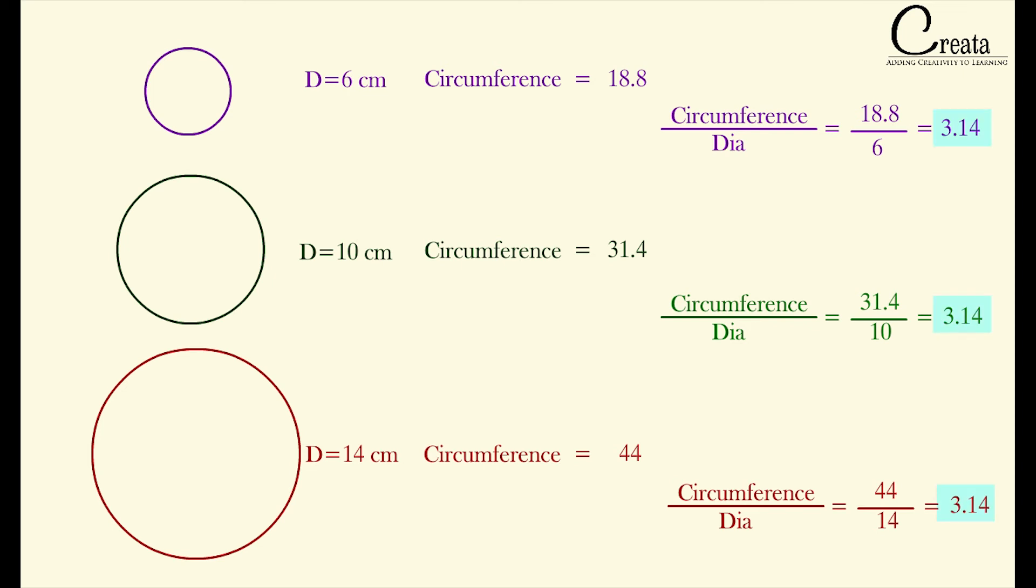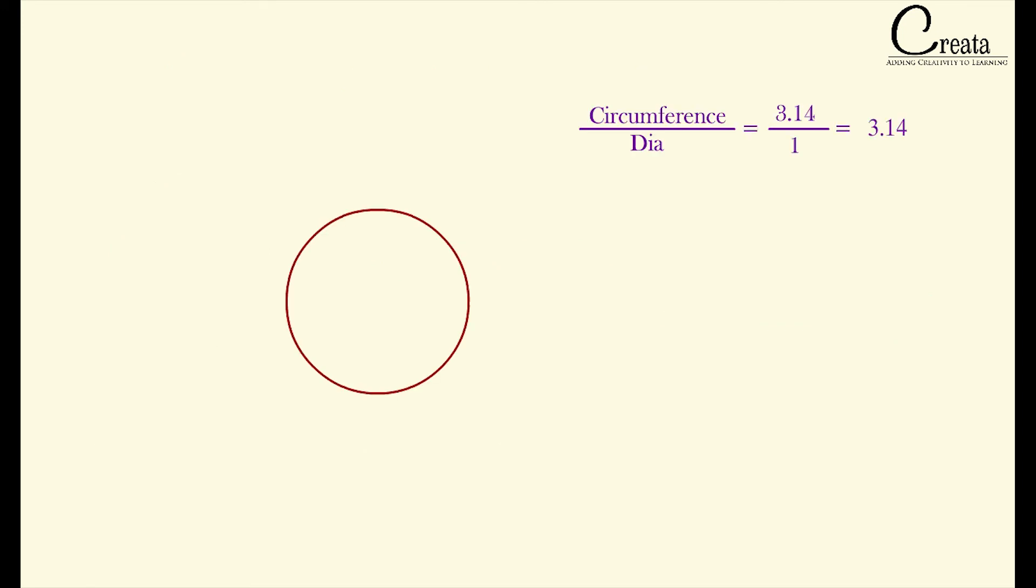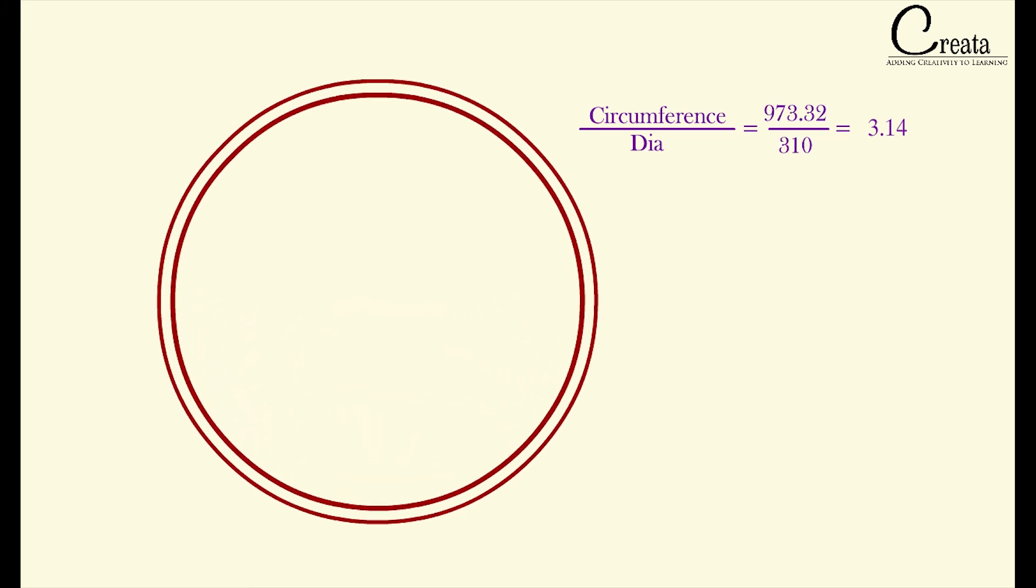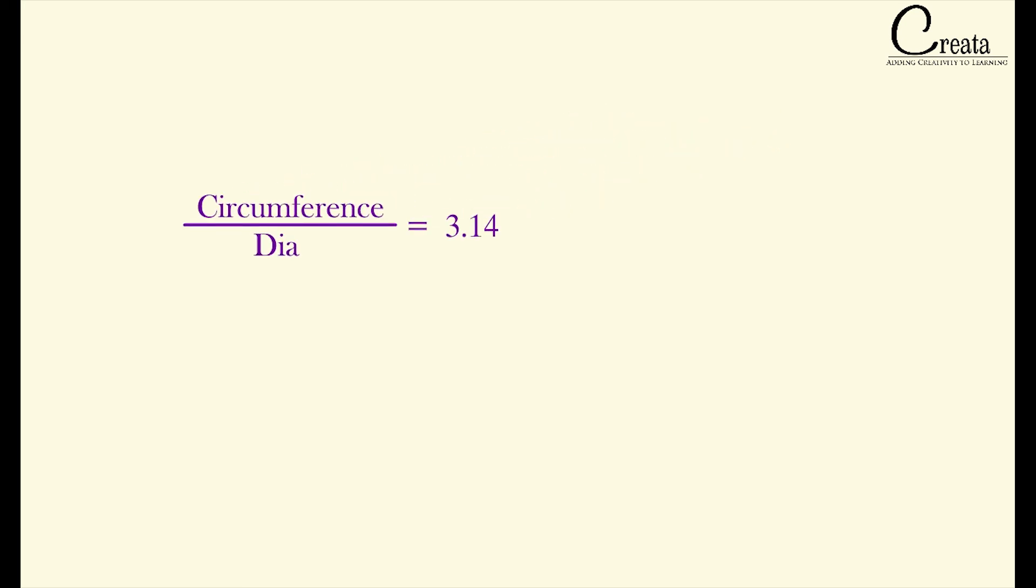This shows that ratio of circumference to diameter of a circle remains same, that is 3.14. Whatever size of circle you will take, the ratio of circumference to the diameter will always come out to be 3.14. You can check so. Take a huge circle and calculate the ratio, it will be 3.14.